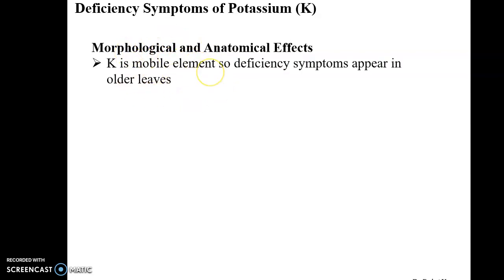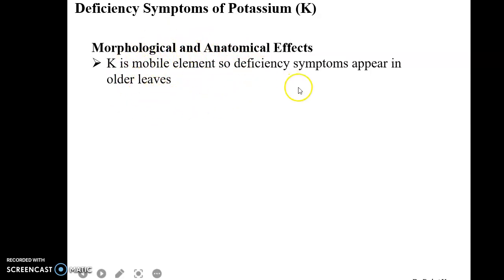Potassium is a mobile element, so its deficiency symptoms always appear initially in the older leaves. If there is any deficiency, the stored potassium will move towards the younger leaves, so deficiency symptoms first appear in the older leaves.